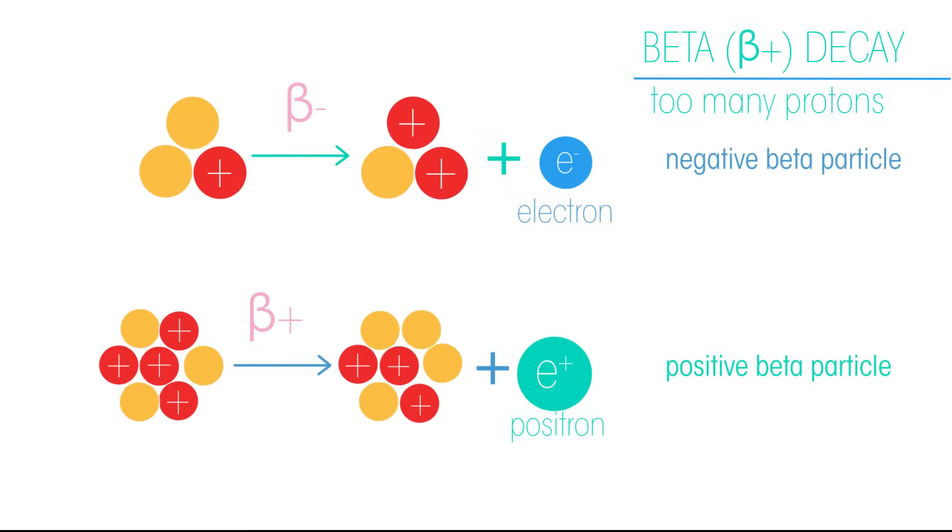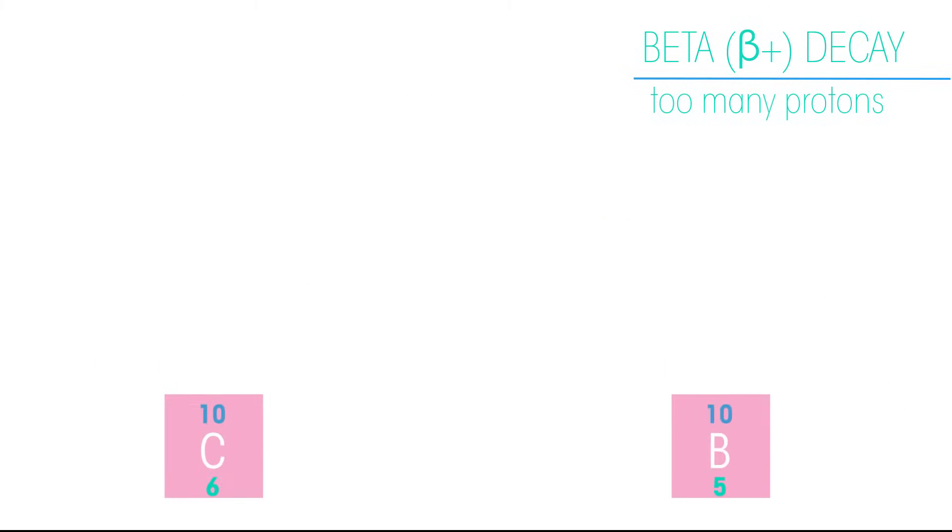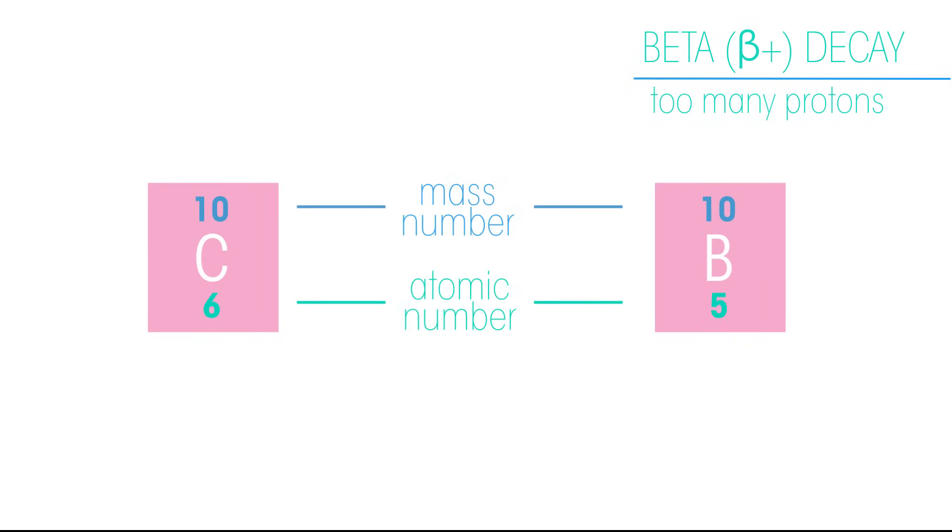Positrons have the same mass as electrons but the opposite charge. By losing a proton but gaining a neutron, the mass number stays the same, but the atomic number decreases by one.